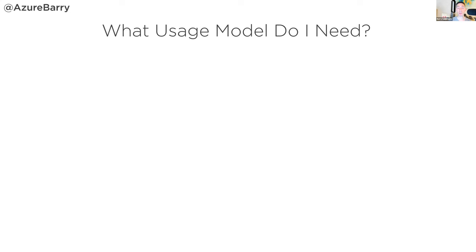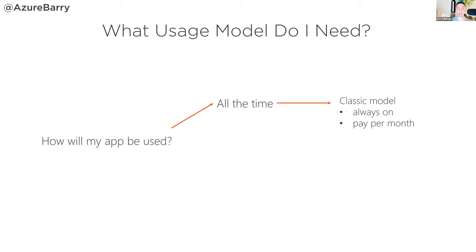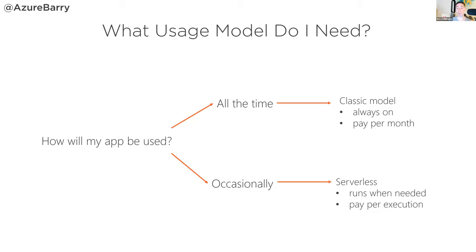The next big picture question is: what usage model do I need — how will my application be used? If it's used all the time, like a web shop open day and night seven days a week, you'd use the classic always-on hosting model, like an Azure App Service web app, and pay for it all month. If your app is only used occasionally — a web service or a batch job that resizes images when they come in — then you'd use a serverless hosting model, which only runs when needed and charges per execution.